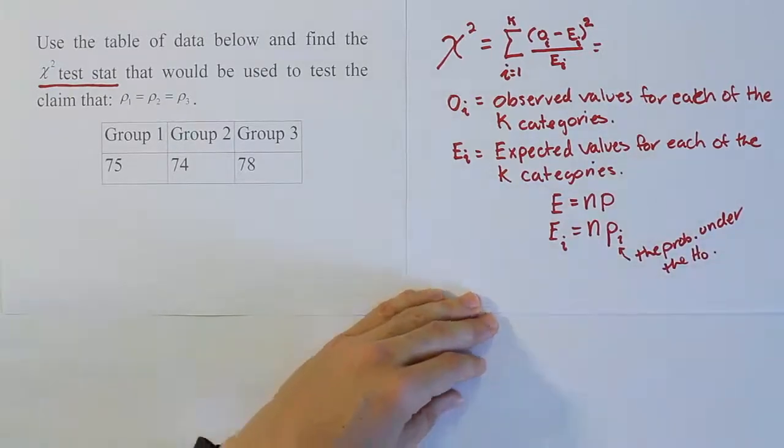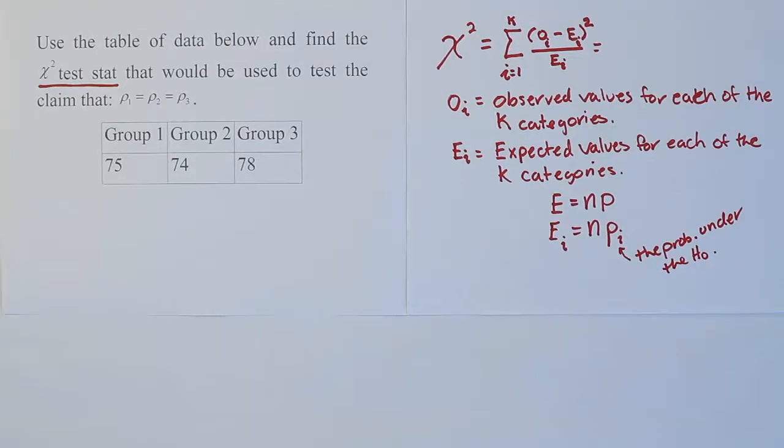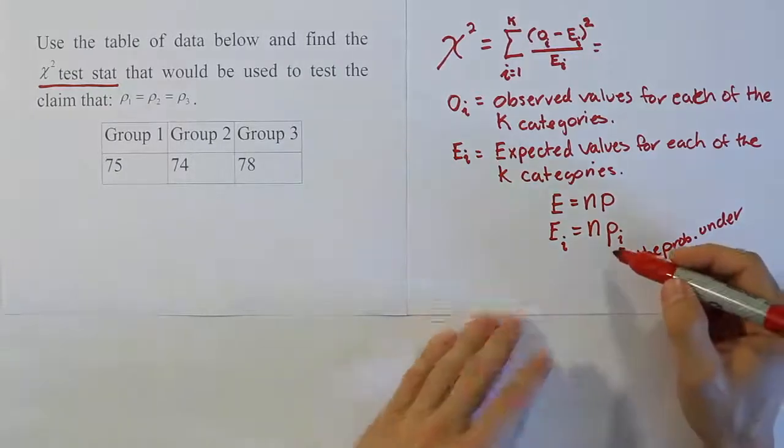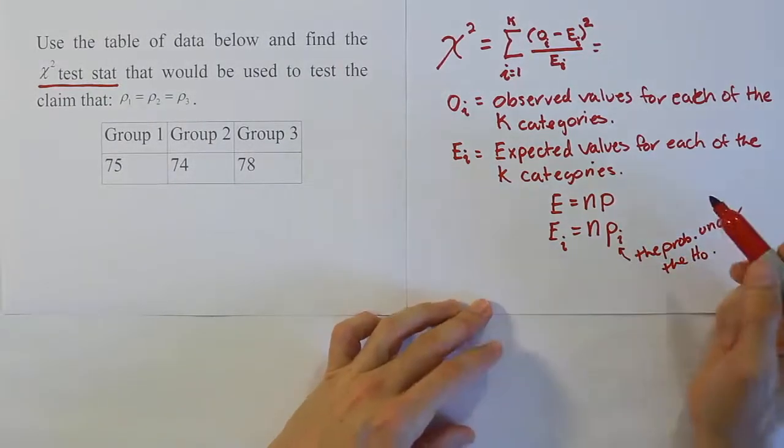So this is going to be the probability or proportion under the null hypothesis H0. For example in this problem, if we're saying that all three of these are equal, that's going to mean something about these proportions for each category.